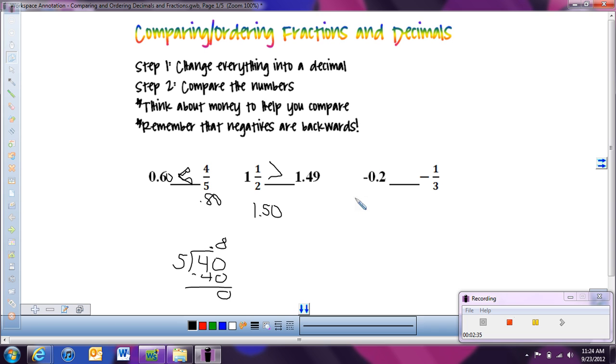Now this last one I just wanted to point out because there's negatives. And we talked a while back ago when we were learning about integers, that with negatives, everything is backwards. So the first thing I'm going to do is change everything to a decimal just like before. And negative one-third as a decimal, we talked about this a lot in the last lesson, is .3 repeating. Or in this case, I'm just going to write it as .33.